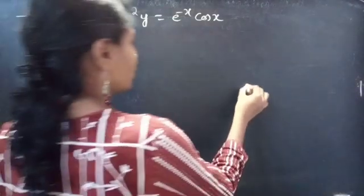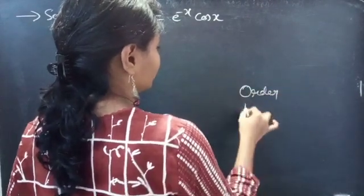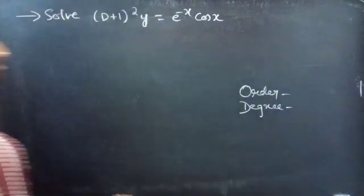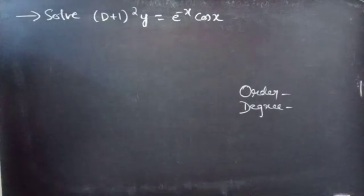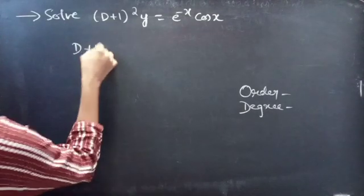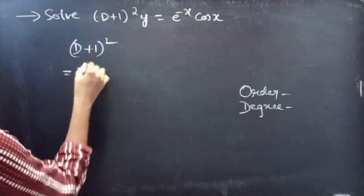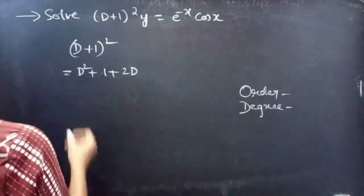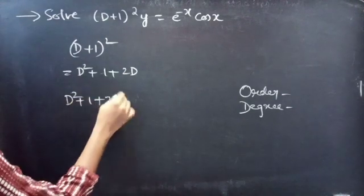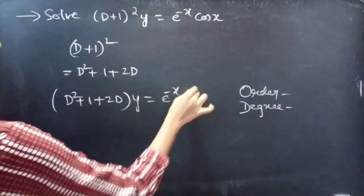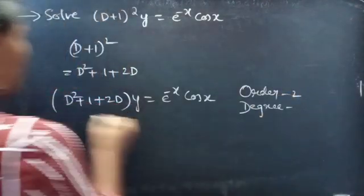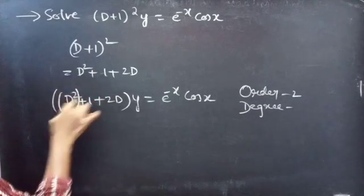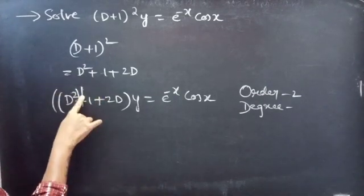Firstly, let's find the order and degree of the given differential equation. To identify the highest derivative, we need to expand (D+1)². Expanding gives D² + 2D + 1, so the equation becomes (D² + 2D + 1)y = e^(−x) cos x. Here D² is the highest derivative, so the order is 2. The highest power of the highest derivative is the degree, which is 1.